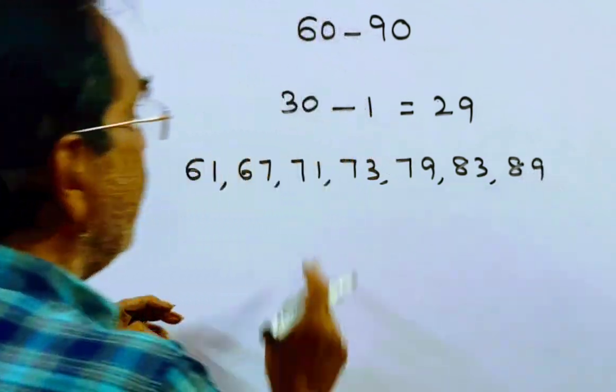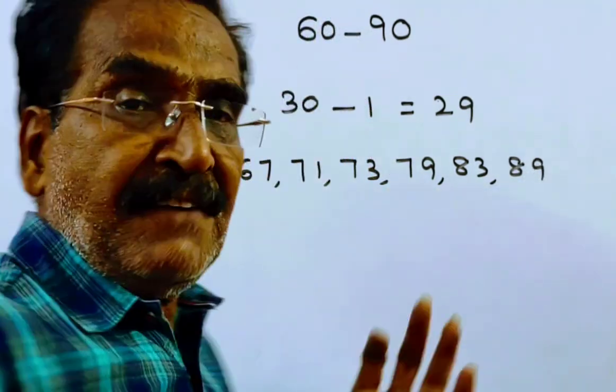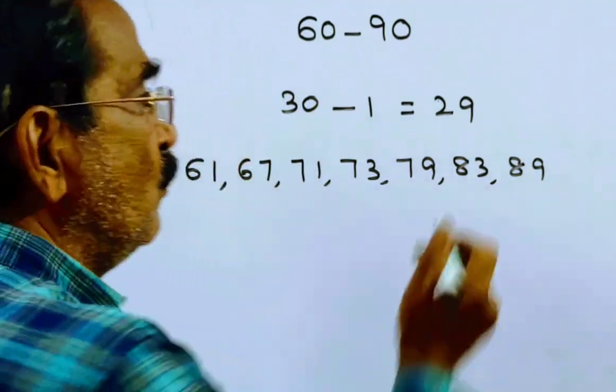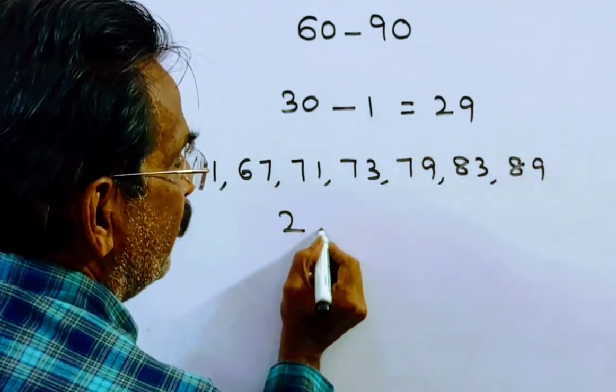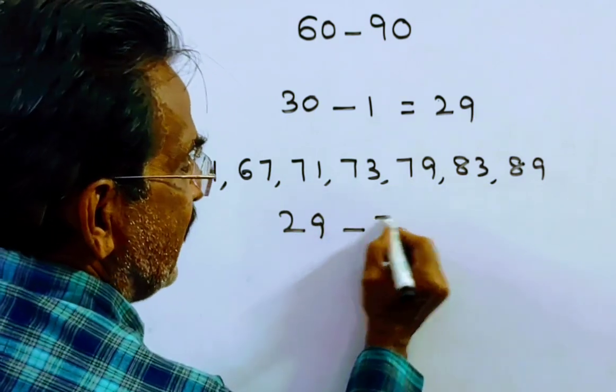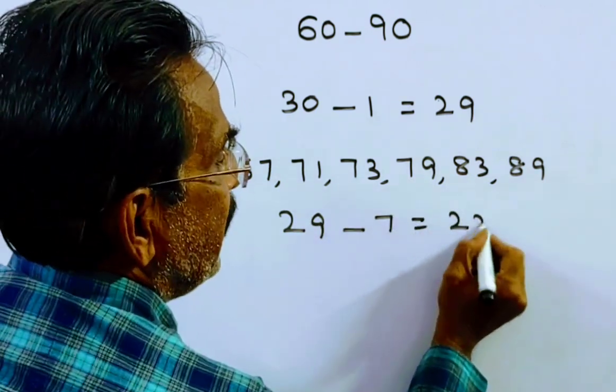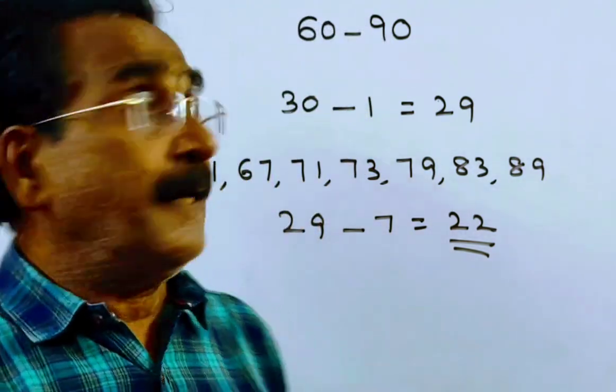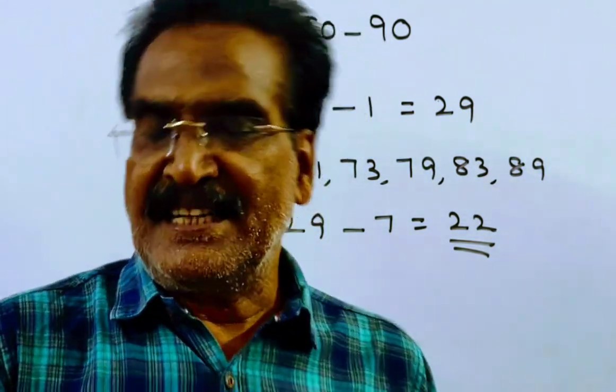So how many prime numbers are there? 7 prime numbers are there between 60 and 90. So total numbers 29, 29 minus 7, equals 22 composite numbers will be there between 60 and 90. Thank you.